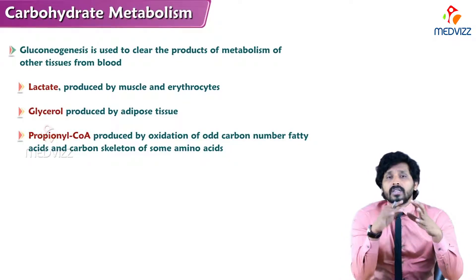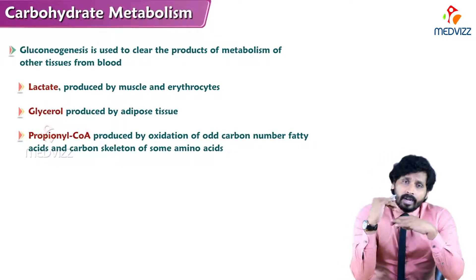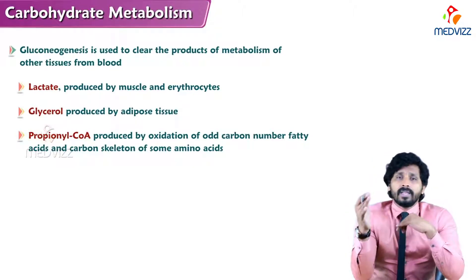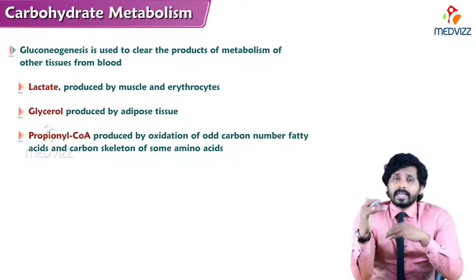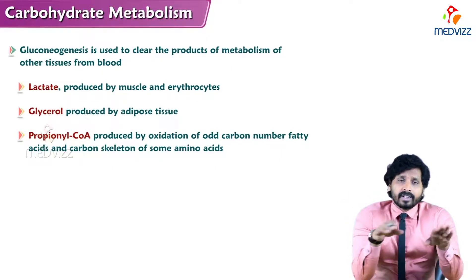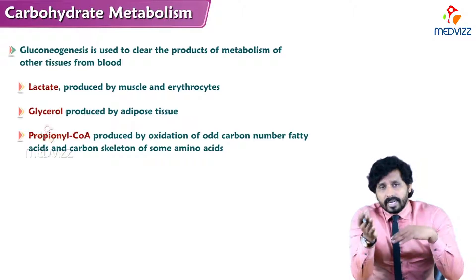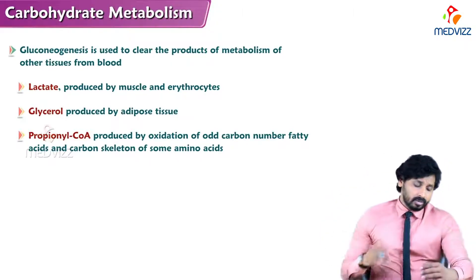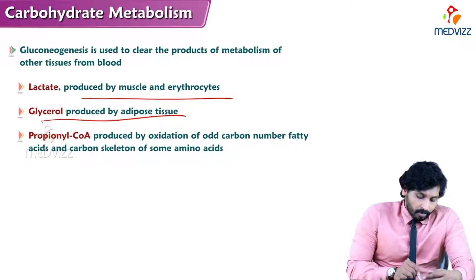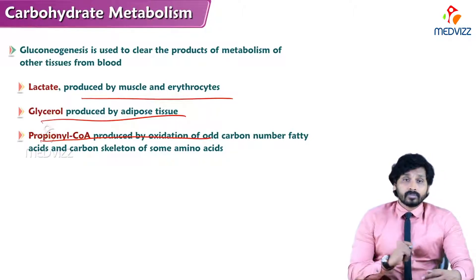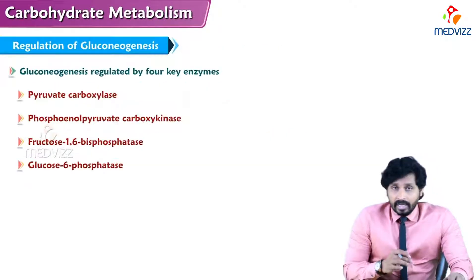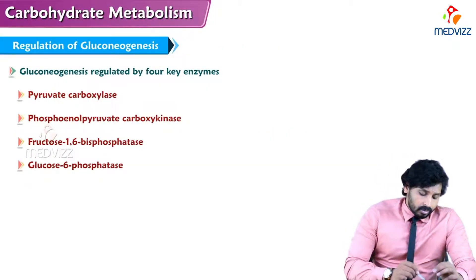Gluconeogenesis also supplies glucose to other tissues like erythrocytes, the lens and cornea of the eye, and the kidney. It is also used to clear accumulated products — for example, during strenuous exercise lactate builds up causing body pain for two to three days, and that accumulated lactate is transported to the liver, converted back to glucose, and supplied to skeletal muscles. Other substrates include glycerol from adipose tissue, propionyl-CoA from oxidation of odd-chain fatty acids, and carbon skeletons of some amino acids.